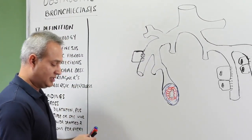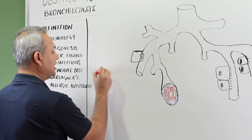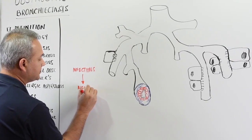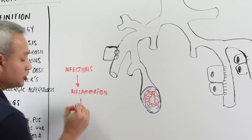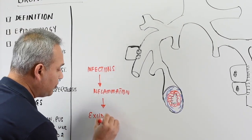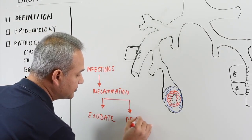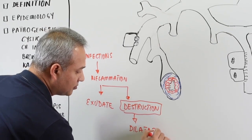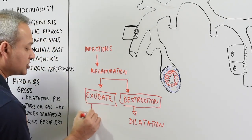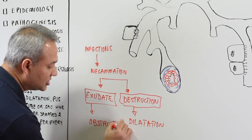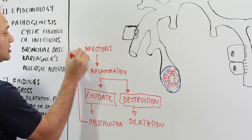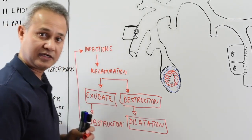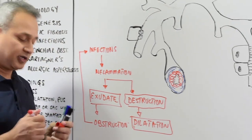From a pathogenesis point of view, what is the pathological mechanism? At the end of the day, there is going to be an infectious process. Infections lead to inflammation, which causes local tissue destruction, producing exudate and tissue destruction. This destruction leads to dilatation, while the exudate causes obstruction. That obstruction then increases infections, and this cycle continues until we reach dilatation — which is bronchiectasis.